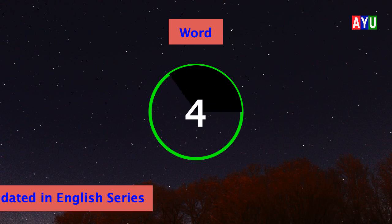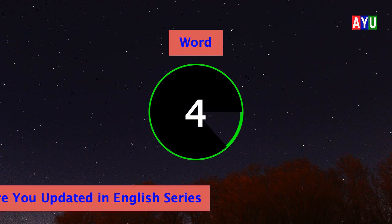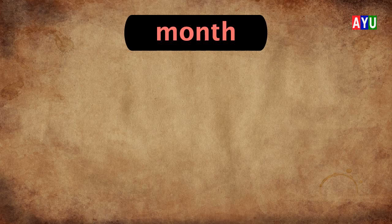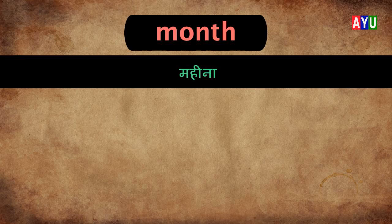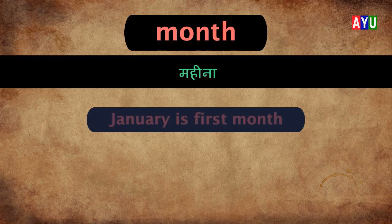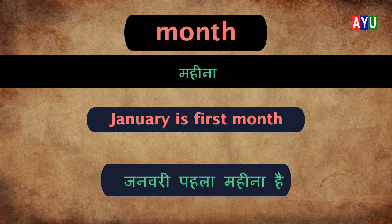Fourth word: Month. Month means Mahina. Let's see one example — January is first month. January pehla mahina hai.